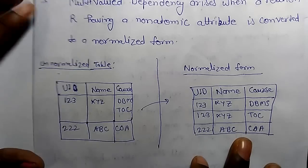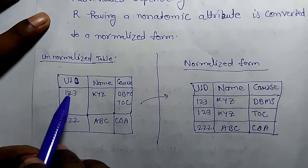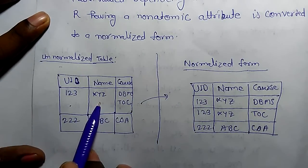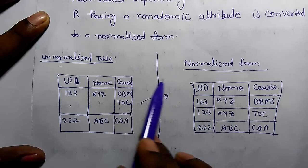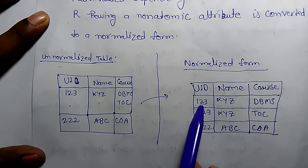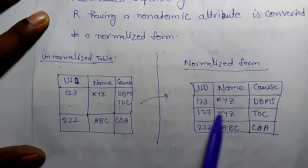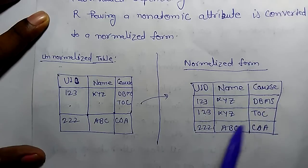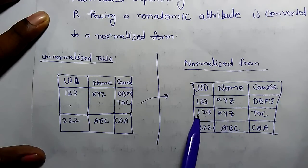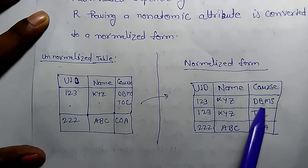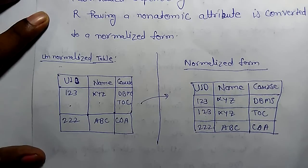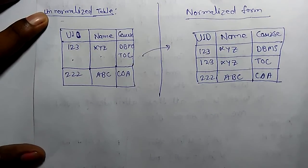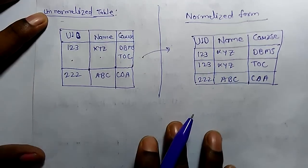This is an unnormalized table. UID 123 has name XYZ but has opted two courses: DBMS and TOC. When we normalize this table into atomic values, UID 123 has the same name with two different courses, so we get two rows: (123, XYZ, DBMS) and (123, XYZ, TOC). This is multivalued.